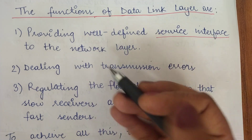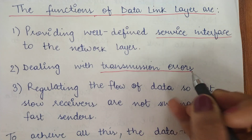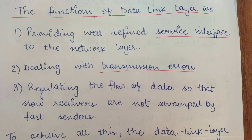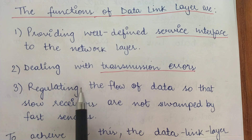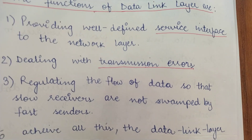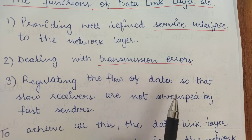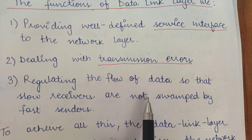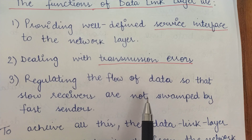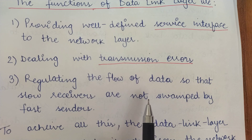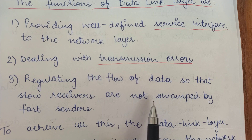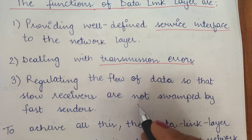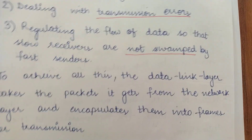The second function is dealing with transmission errors — that is, errors in data which may occur during transmission. Finding and correcting those errors is also a function of the data link layer. The third function is regulating the flow of data, meaning ensuring the data rate is optimum: neither too slow so the receiver is sitting idle, nor too fast so the receiver cannot process earlier data before new data arrives. Basically, we are concerned that receivers are not swamped by fast senders.